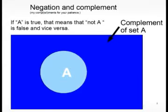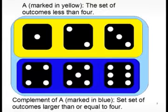First on the definition list is logical negation. If you have a statement A, you can make a negation: not A. If A is true, then not A is false, and vice versa. The similar set theoretical concept is called the complement. If A is a set, the complement of A is the set of elements that are not contained in A. So for instance, if A is the set of dice outcomes smaller than four, the complement is the dice outcomes larger than or equal to four.